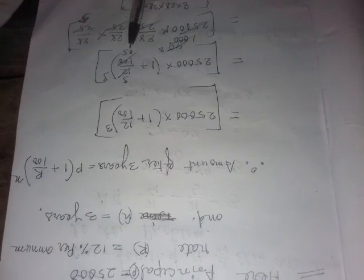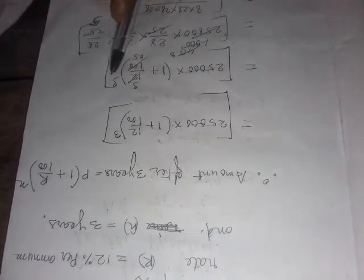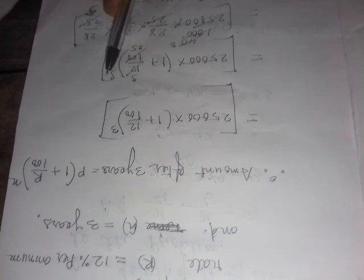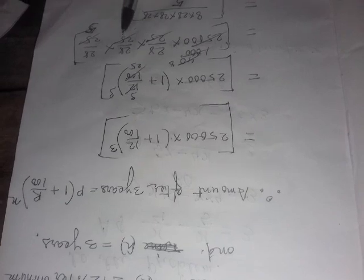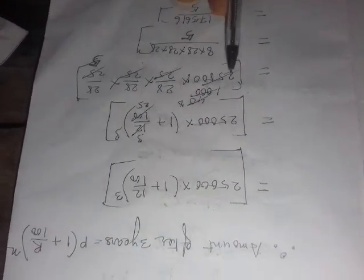Now 1 plus 12 by 100: since 12 by 100 simplifies, 4 times 25 is 100, so we get 28 by 25. This is cubed because of 3 years, so it becomes 28 by 25 multiplied three times: 28 by 25 times 28 by 25 times 28 by 25.